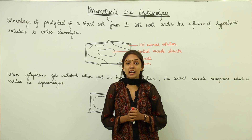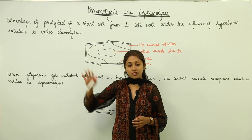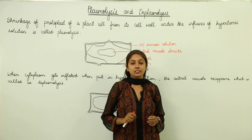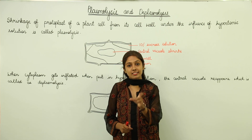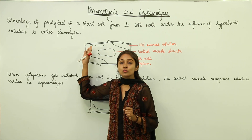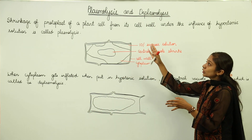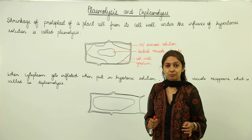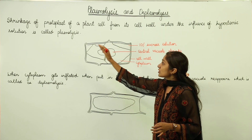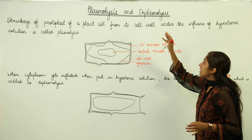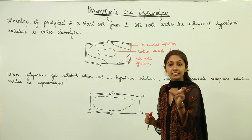Let us now discuss plasmolysis and deplasmolysis in detail. Along with this we will also discuss root pressure, turgidity, and flaccidity. So this topic is going to cover all these topics. Let's discuss first of all what is plasmolysis. Shrinkage of the protoplast of a plant cell from its cell wall under the influence of a hypertonic solution is called plasmolysis.